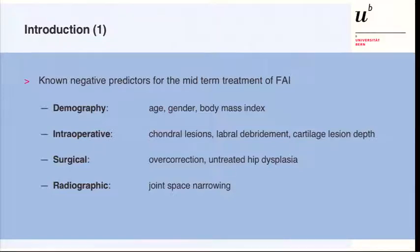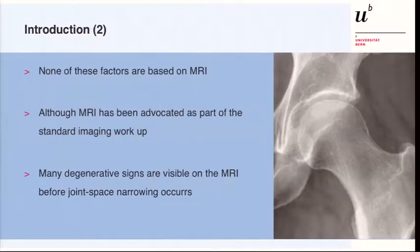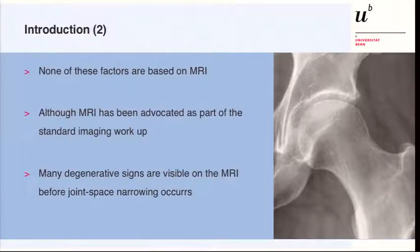We also have radiographic parameters, typically joint space narrowing visible on a conventional radiograph. Interestingly, none of these factors is based on MRI, although MRI has been advocated as part of the standard imaging workup. It is always the first question when we see these patients after the conventional radiographs: where is the MRI?